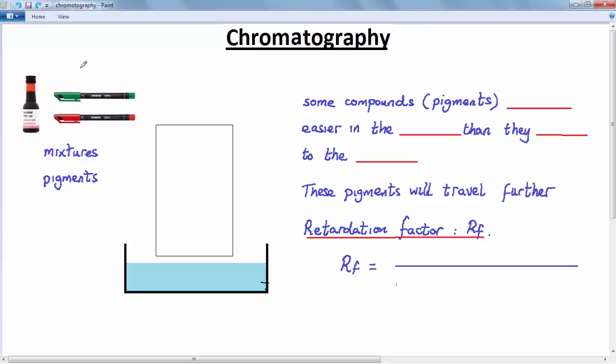This particular type of chromatography is known as paper chromatography because we use filter paper in the process. So what do we do? We've got a piece of filter paper here.